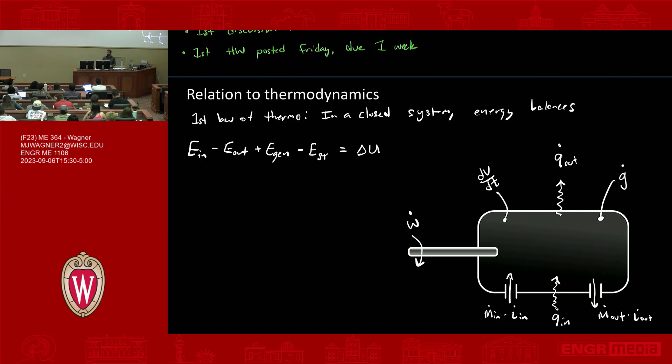This is true for some period of time, some delta T duration. When we're talking about a moment in time, a rate, this all is basically the same, but we just rewrite it in terms of rates. So we'd say E dot in minus E dot out plus E dot gen minus E dot stored is equal to not delta U anymore, but some change in internal energy with time, which is dU/dt. This first law relationship helps us develop an ordinary differential equation with respect to time.